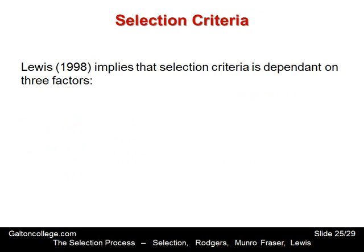Lewis implies that selection criteria depends on three factors. These depend on the organisation to a large extent. At the organisational level, what is the company looking for? Companies want people who are going to enjoy working for them — well-motivated, well-presented, careful, accurate, keen to build a quality product, efficient, and keeping good time. People who don't create problems but instead solve them. At the organisational level there's a whole set of generic, widespread requirements.